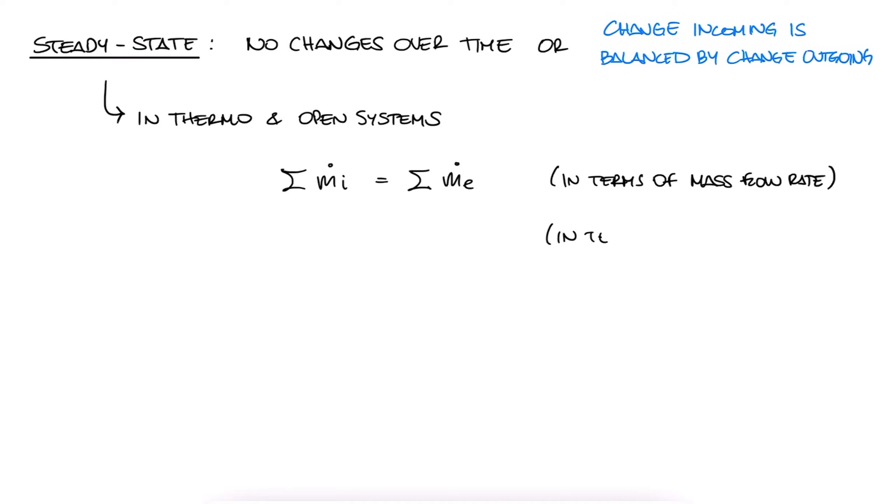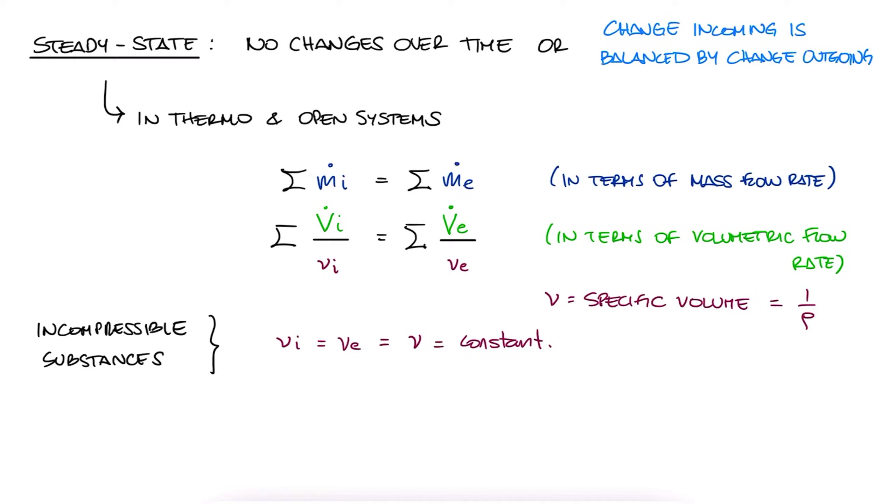If we write this in terms of the volumetric flow rate, we would have volumetric flow rate on top and the specific volumes in the denominator. And specifically for incompressible substances, since the specific volume cannot change for them to be incompressible, they cancel each other out and we have the sum of volumetric flow rates only. But again, ONLY for incompressible substances.